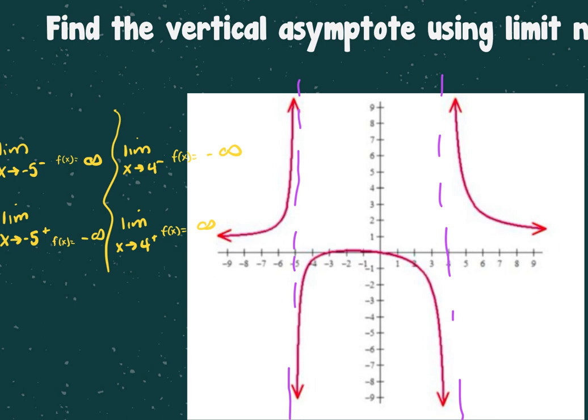It doesn't matter which vertical asymptote you do first, as long as you have all four limit expressions. This limit notation is for vertical asymptotes. The other limit notation is for end behavior — those are two completely different things. A question could ask for both end behavior and vertical asymptotes using limit notation, so those are the two different things.